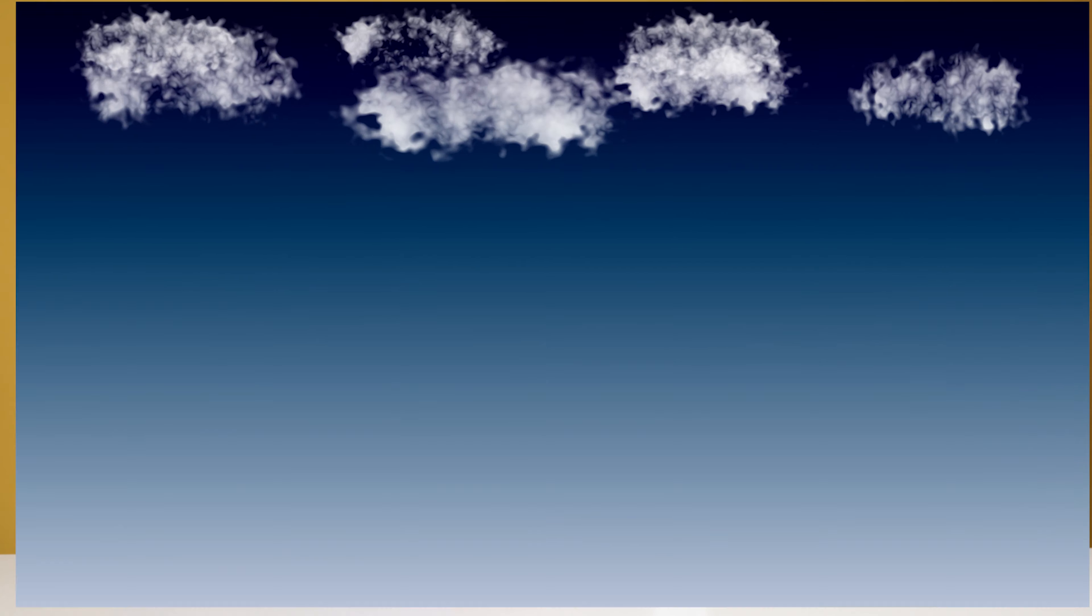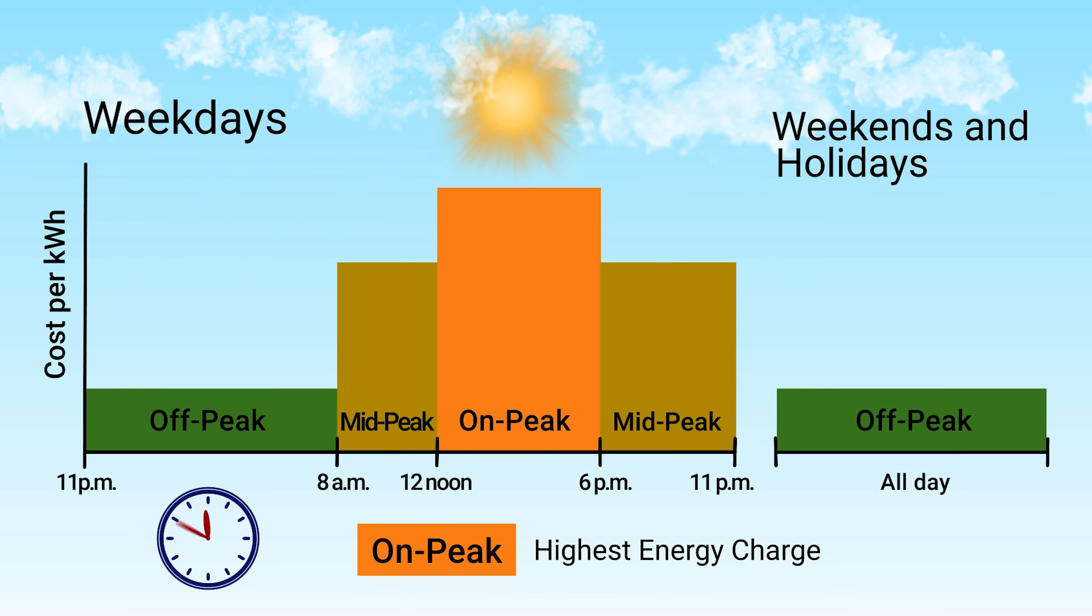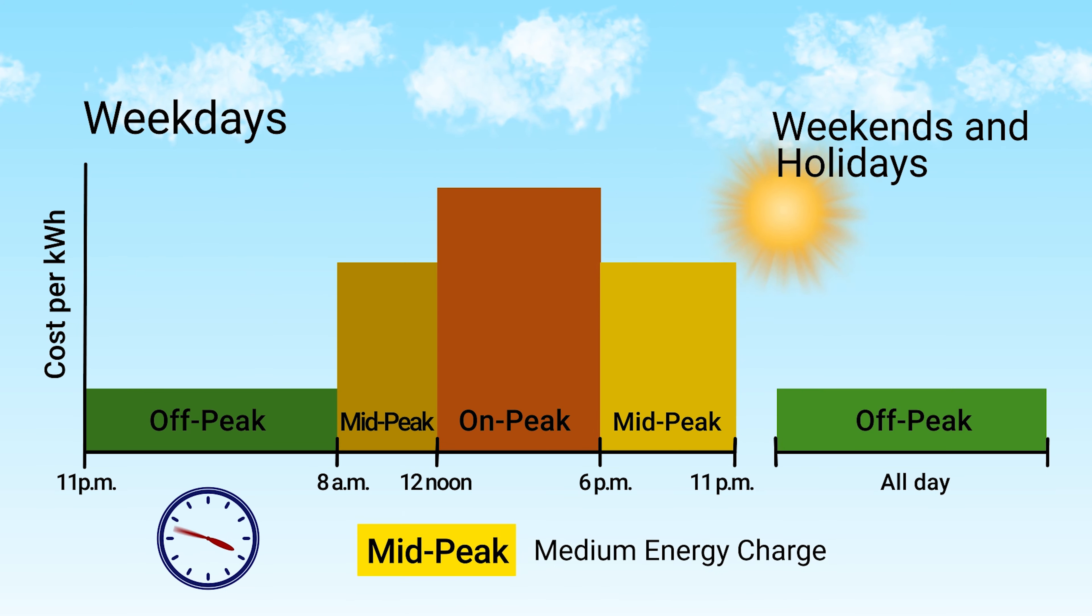One more tip is to use less electricity during peak times. Those are usually in the morning when everyone wakes up, and in the evening when everyone comes back from work. If you have this kind of plan with your supplier, try not to turn on the dishwasher or any other unnecessary electric appliances when the electricity costs you double the price.